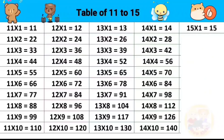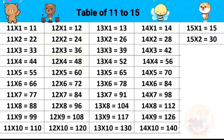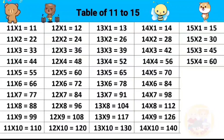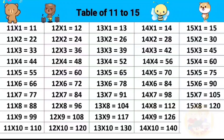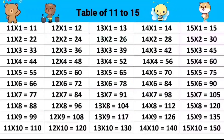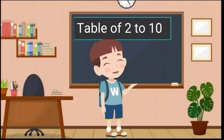Table of fifteen. Fifteen ones are fifteen, fifteen twos are thirty, fifteen threes are forty-five, fifteen fours are sixty, fifteen fives are seventy-five, fifteen sixes are ninety, fifteen sevens are one hundred five, fifteen eights are one hundred twenty, fifteen nines are one hundred thirty-five, fifteen tens are one hundred fifty.